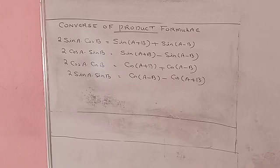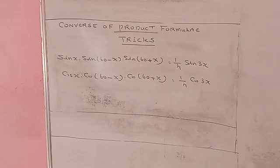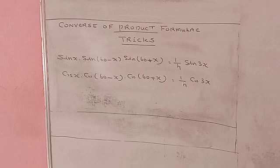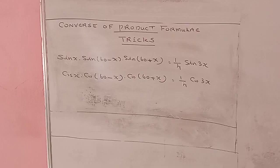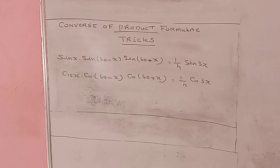Memorize all these four results. In this topic we apply some tricks to solve converse of product formula problems. Here are the two tricks. First: sin x · sin(60°-x) · sin(60°+x) = 1/4 sin 3x. This is an important tricky formula. Second: cos x · cos(60°-x) · cos(60°+x) = 1/4 cos 3x. Memorize both these results well; we can solve problems in two or three steps using these tricks.